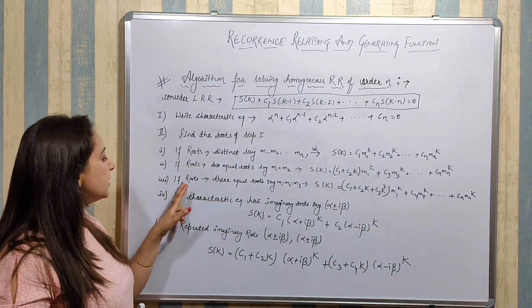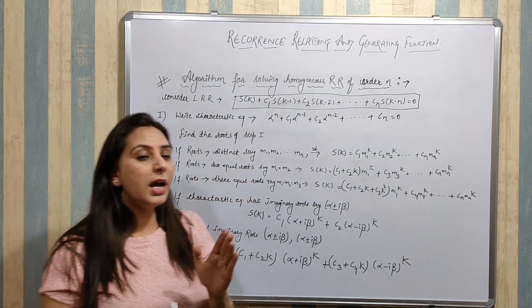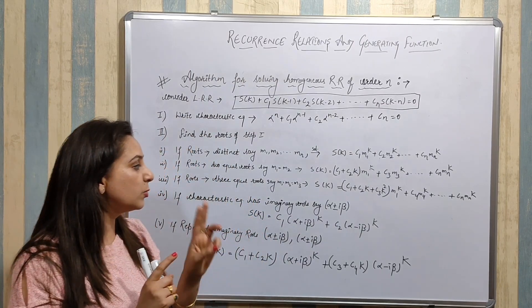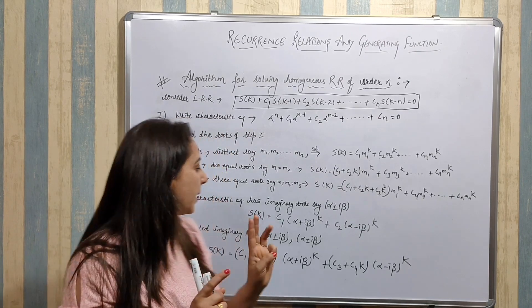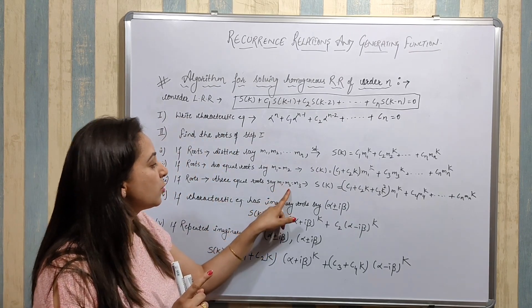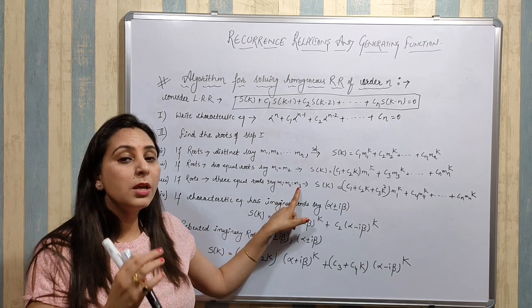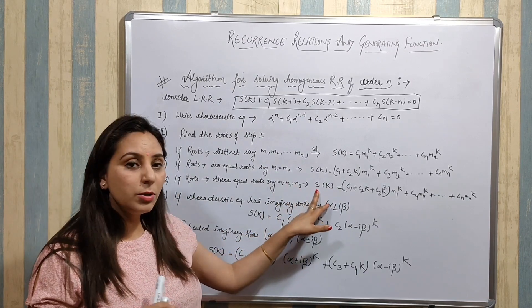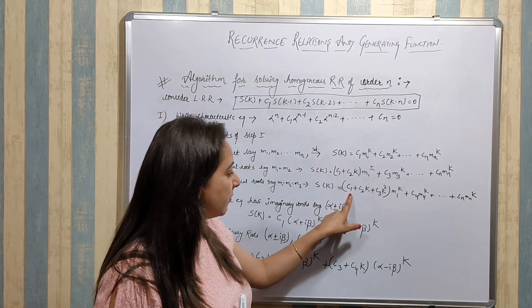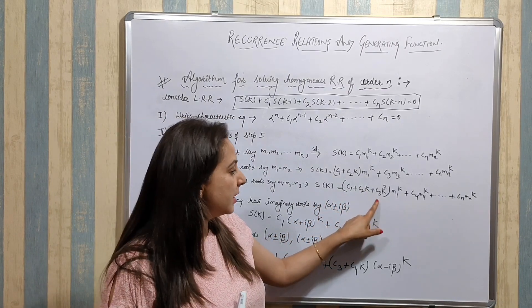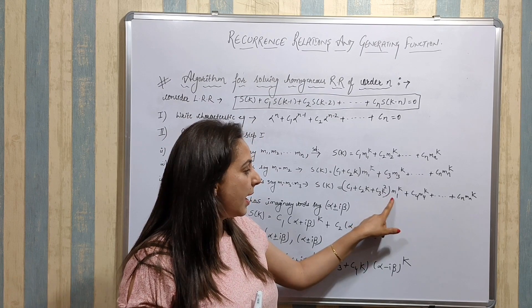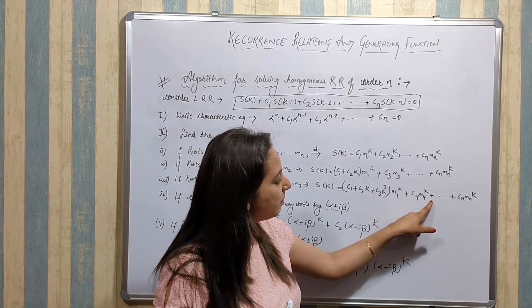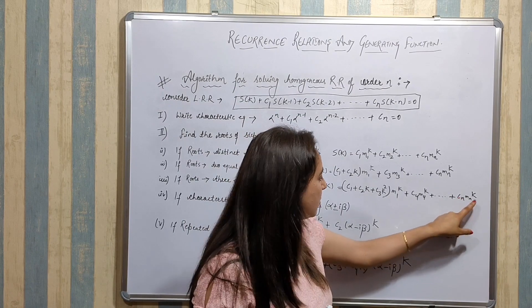If the roots have three equal roots, suppose M1 = M2 = M3, then the solution is: S(K) = (C1 + C2·K + C3·K²)·M1^K + C4·M4^K + ... + Cn·MN^K.